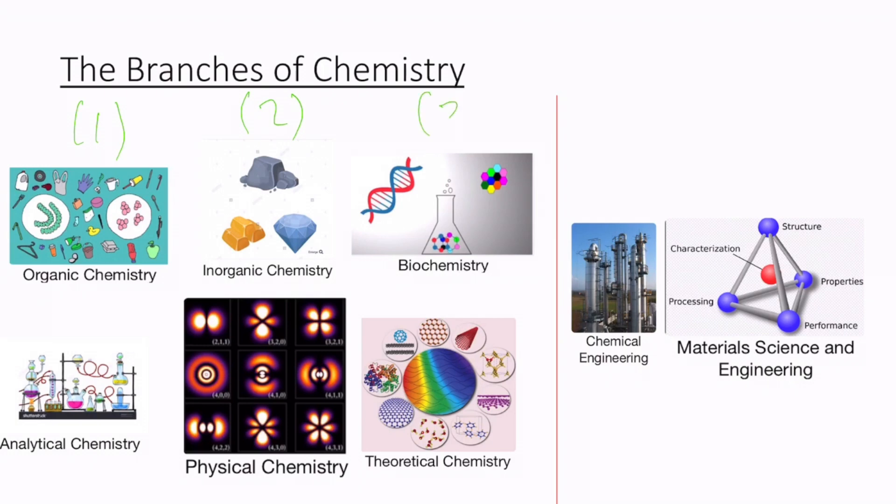The third one is biochemistry, which studies matter and processes of living organisms. Some examples are metabolism and fermentation. The fourth one is analytical chemistry, which studies components and composition of substances. People in this field can go into quality control of food or the study of food nutrients. The fifth one is physical chemistry, which focuses on the behavior and changes of matter. Some examples are the study of reaction rates and reaction mechanisms.